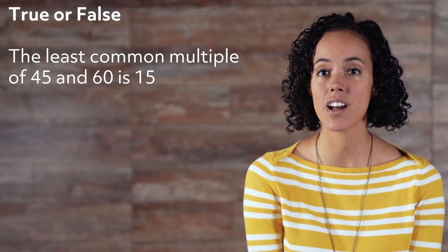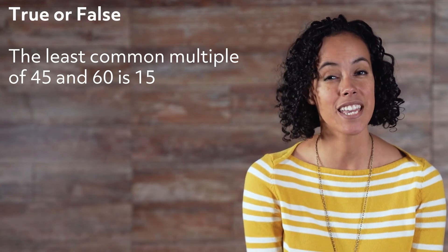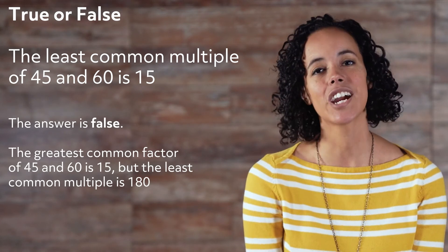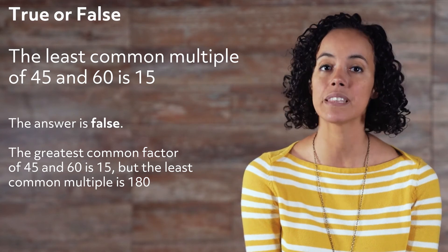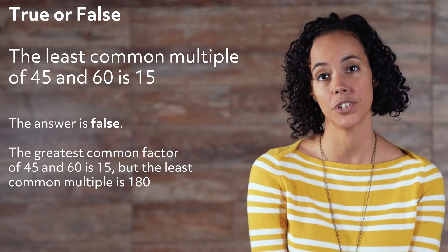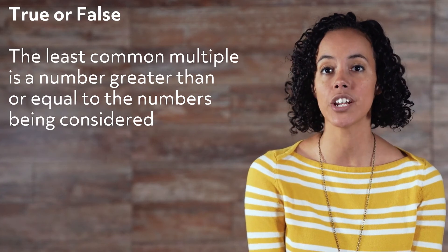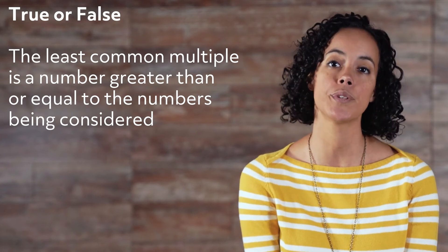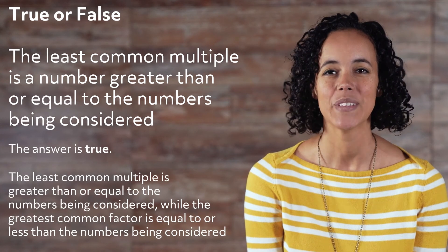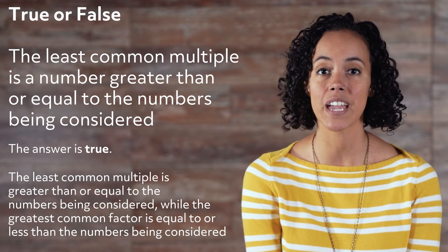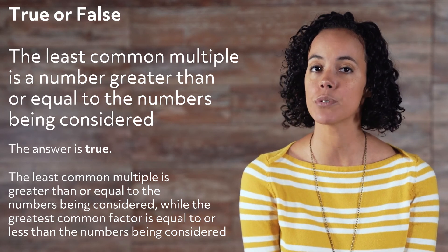Let's wrap up with a couple of true or false review questions. Question 1: The least common multiple of 45 and 60 is 15. The answer is false. The greatest common factor of 45 and 60 is 15, but the least common multiple is 180. Question 2: The least common multiple is a number greater than or equal to the numbers being considered. The answer is true.